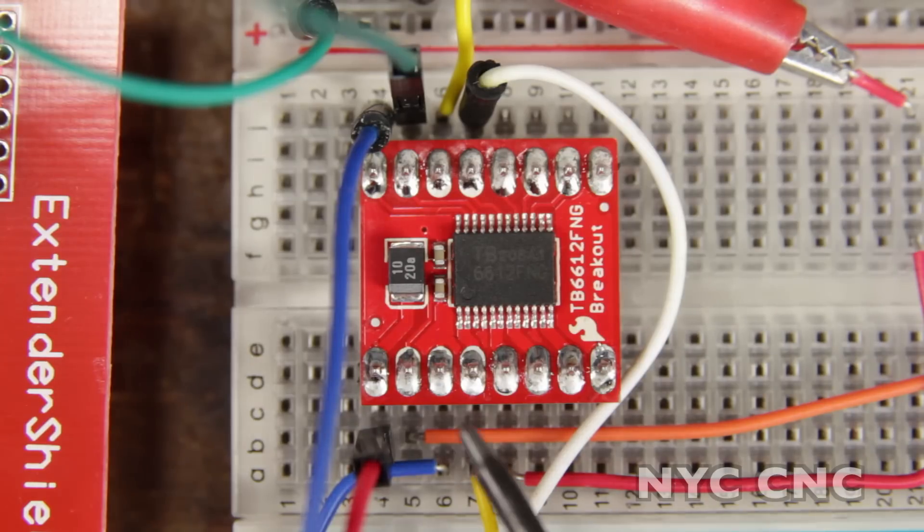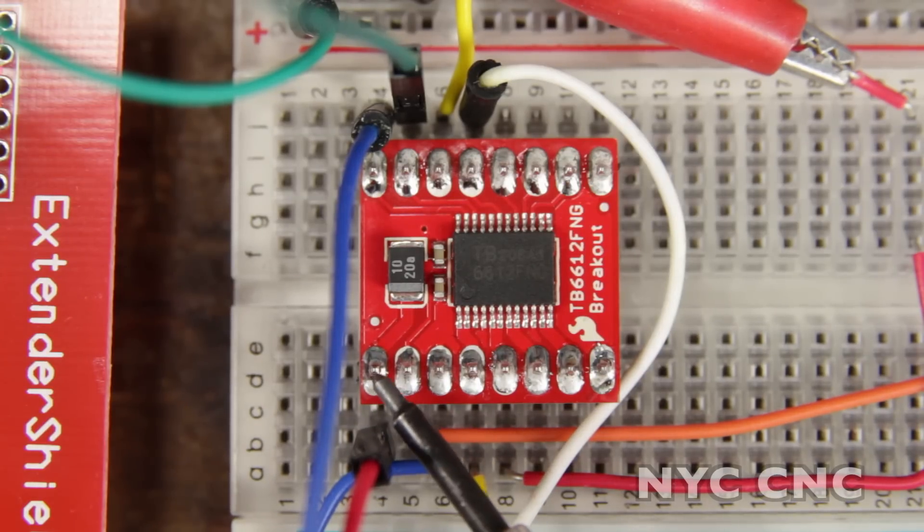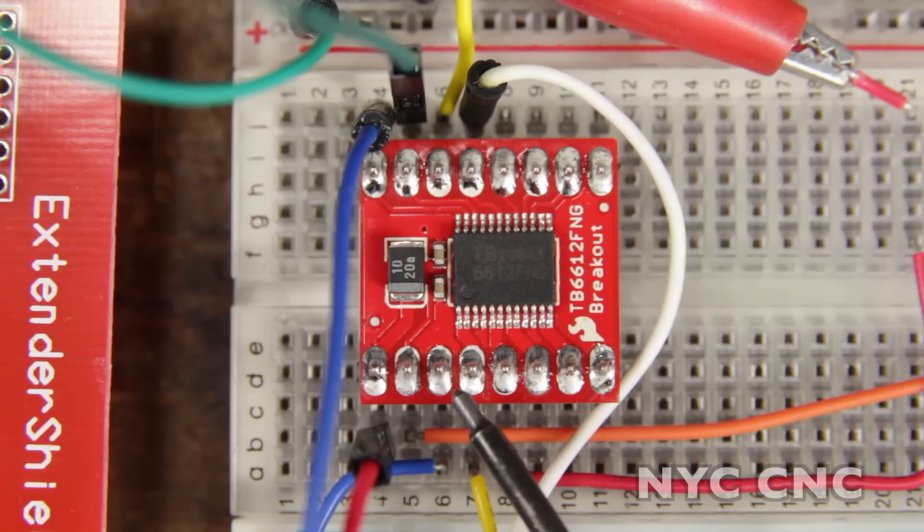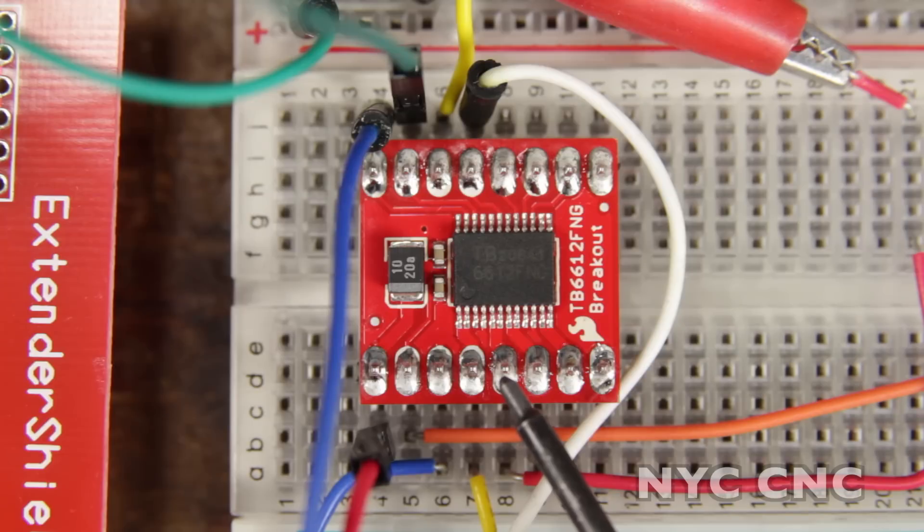Okay take a look at pin layout. Pin one goes to the positive power source for the motor. Pin two goes to positive five volts. Pin three goes to ground. Pins four and five go to the two terminal tabs of your DC gear motor.